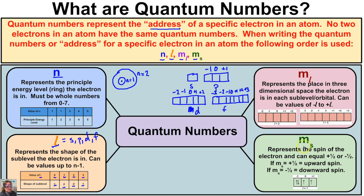The last quantum number, m sub s, represents the spin of the electron and can equal either positive one half or negative one half. If the arrow is pointed up in the orbital, the m sub s value is positive one half. If it's pointed down, the m sub s value is negative one half. Now we can start writing the address, or quantum numbers, for specific electrons in an atom.